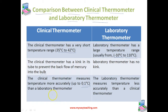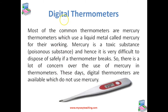The third point is the clinical thermometer measures temperature more accurately, up to 0.1 degrees Celsius. For example, if the temperature is 10.1 degrees Celsius, it measures accurately up to 0.1 degrees Celsius, whereas the laboratory thermometer's accuracy is less than that of the clinical thermometer. These are the important differences between the clinical thermometer and laboratory thermometer.